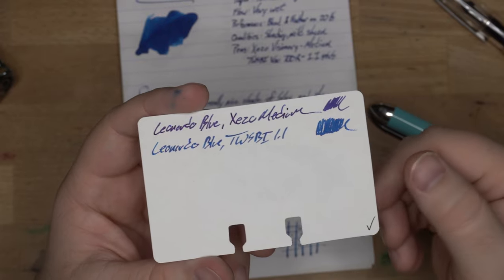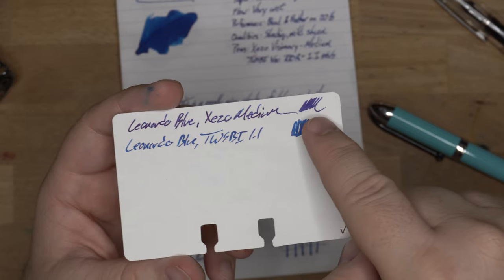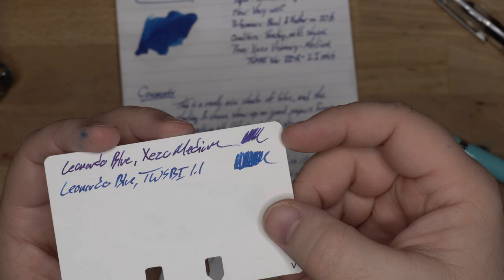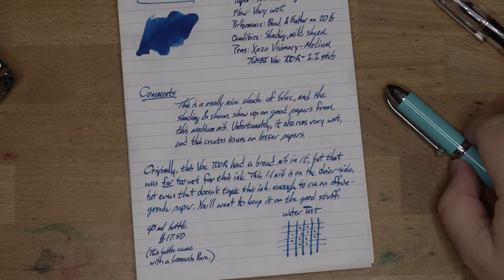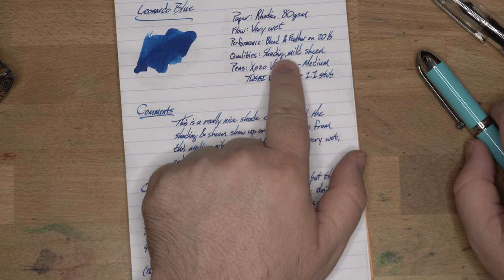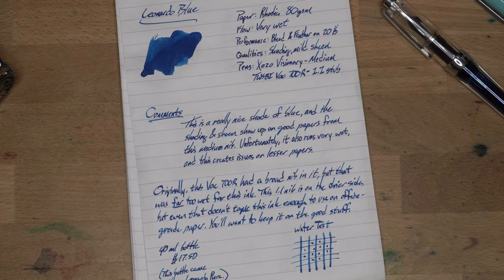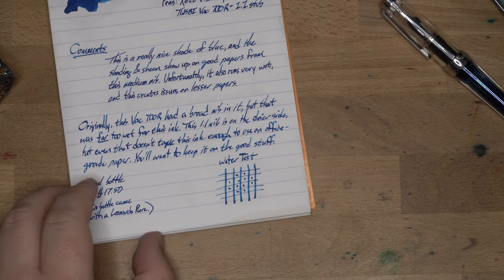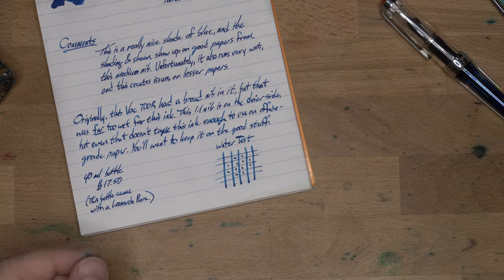That's these two on this Rolodex card. The TWSBI 1.1, very blue. The Zizo Medium, I mean, it's almost blurple because of all the sheen that's laying on top of it. So it's easy to put down enough to get sheen, which is a pretty cool thing about this ink. Shading, mild sheen, unless it's mild shading and serious sheen. Depending on your nib, this ink will act very differently. Let's go ahead and do a water test, and then we'll talk about it on some other papers and things of that nature.